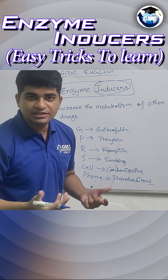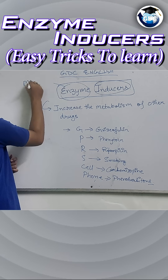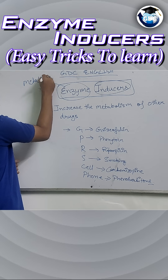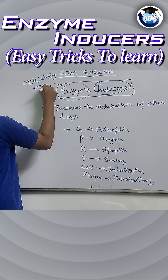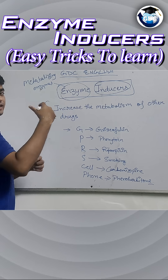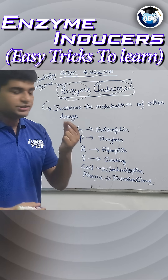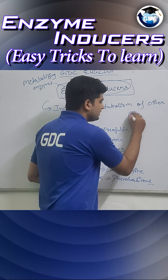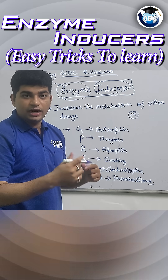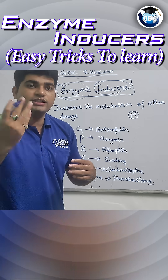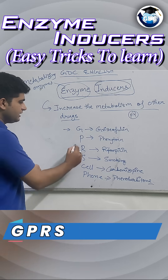Enzyme inducers are drugs which induce metabolizing enzymes — the enzymes responsible for metabolism. So there is a drug which is an enzyme inducer, activating the metabolism of other drugs.